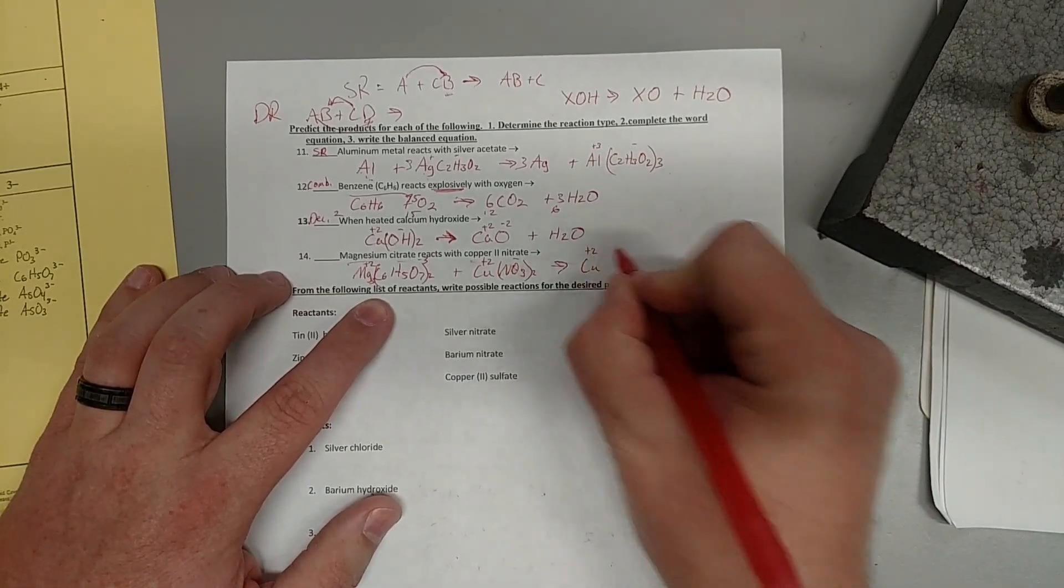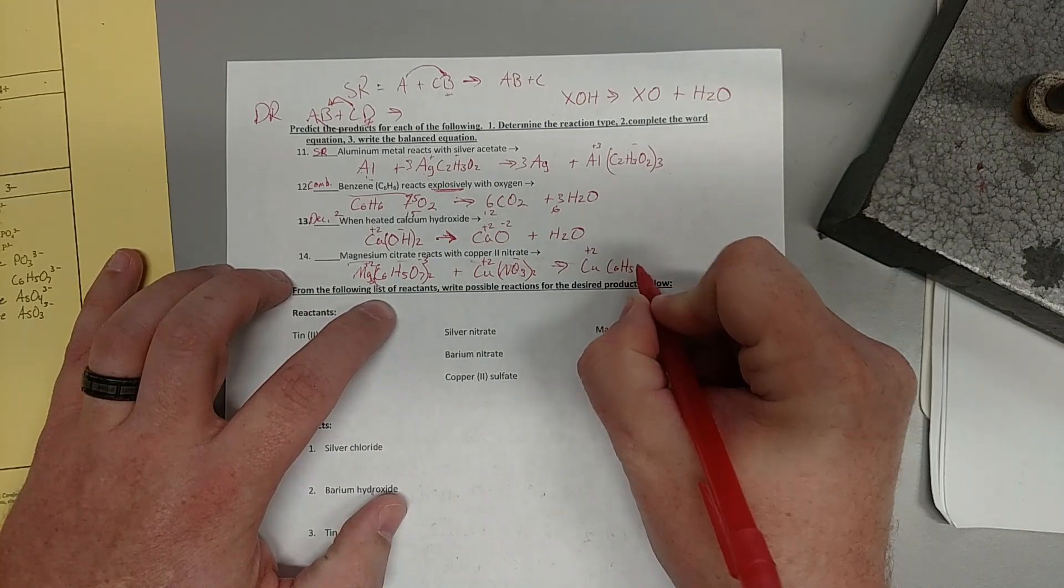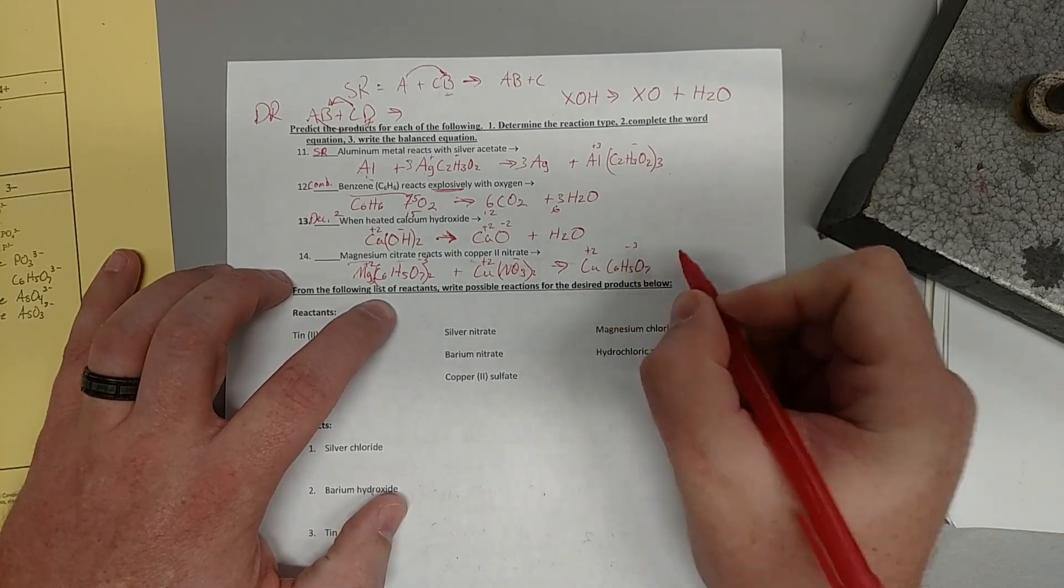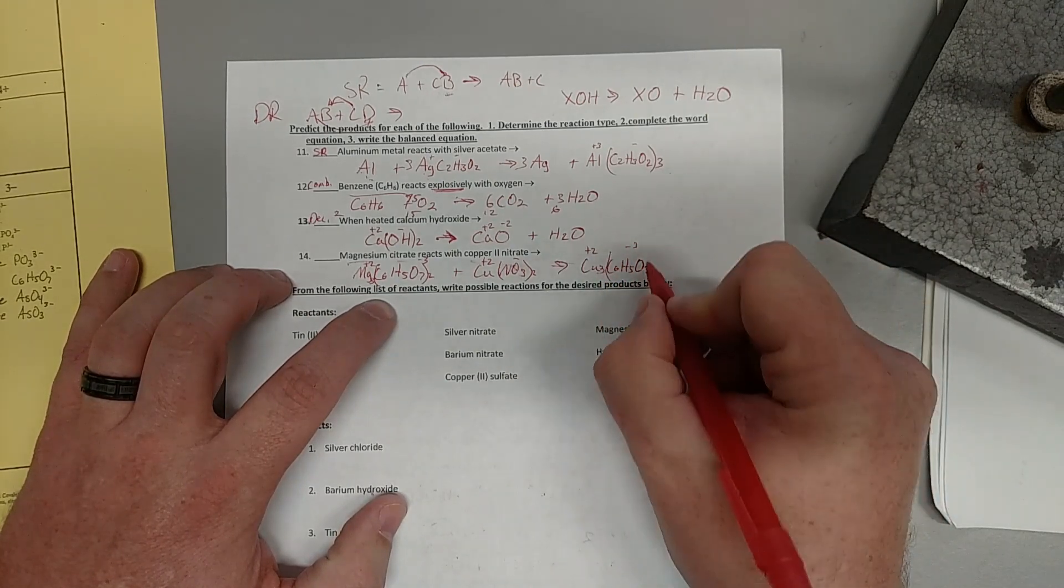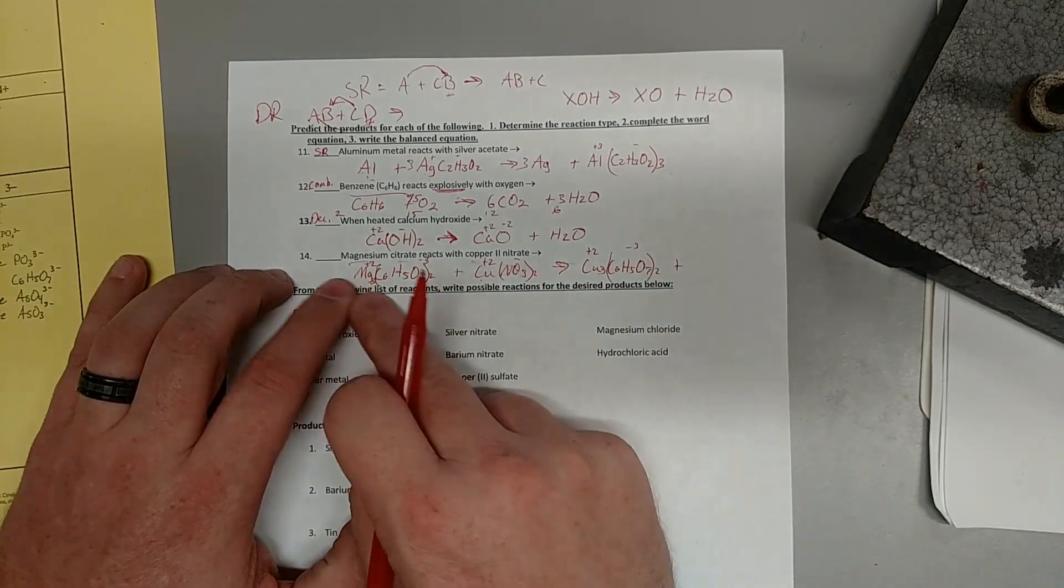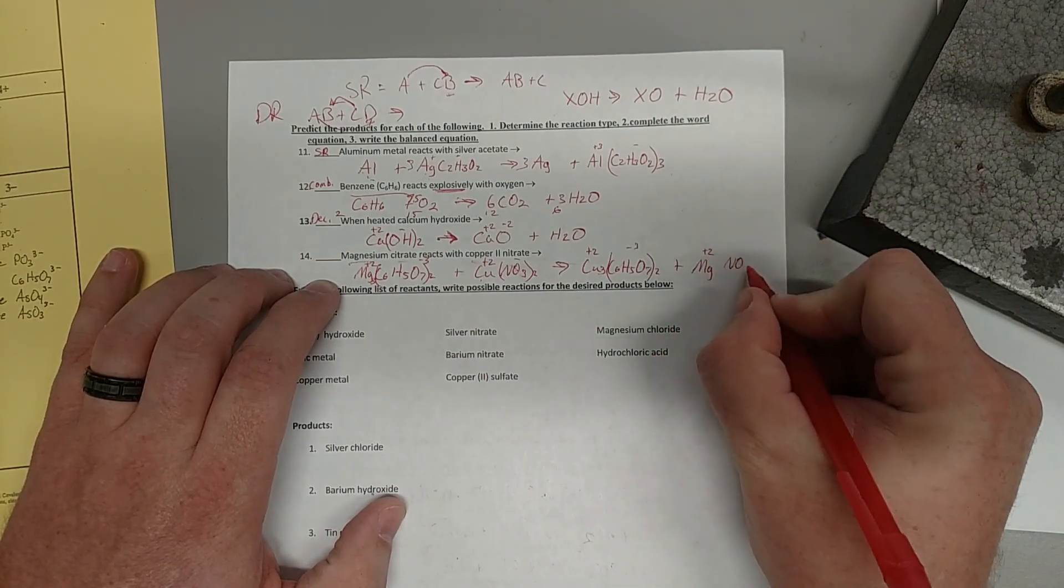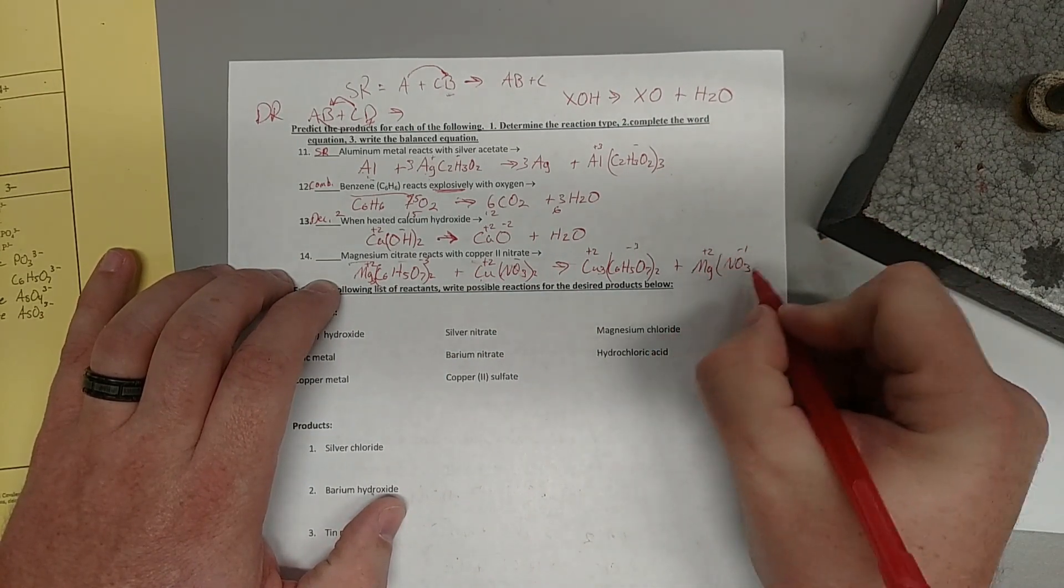So, copper two still, sorry, citrate, C6H5O7 has a minus three charge. So, three, two, and then we have copper, or sorry, then we have the magnesium and the nitrate. So, magnesium plus two, nitrate minus one, so two.